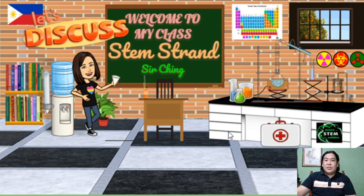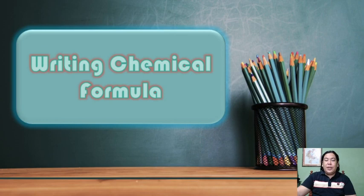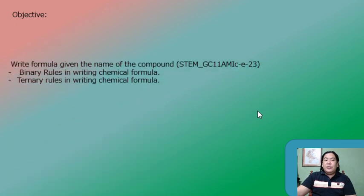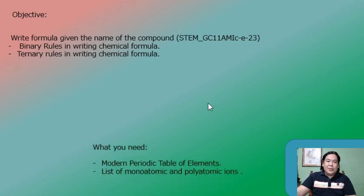Good day, my dear STEM students. For today, we'll be discussing all about writing chemical formulas. In today's lesson, you should be able to write the formula given the name of the compound, both in binary and ternary compounds.